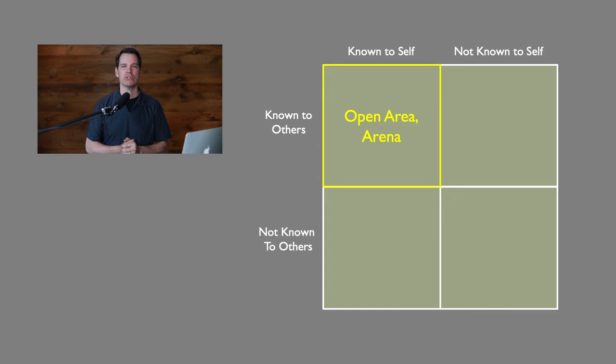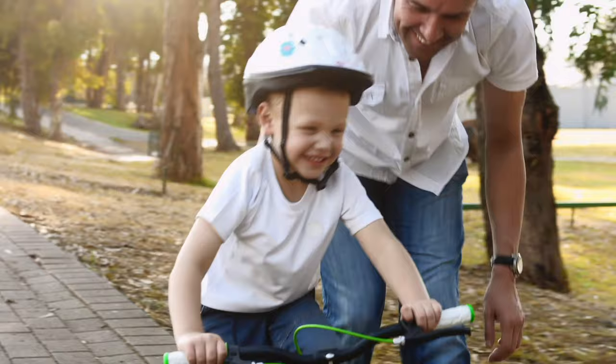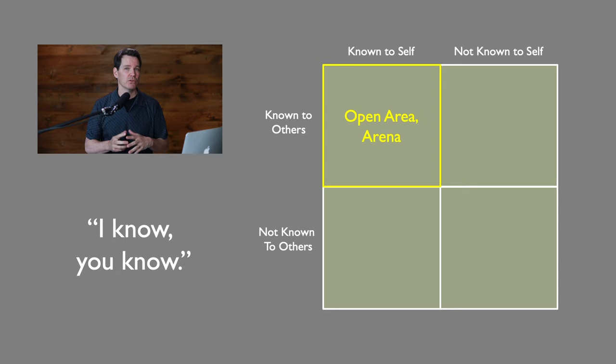Let's start with the most obvious window. This represents everything we know about ourselves and everything that others know about us — it's called the open area or arena, sometimes described as the 'I know, you know' window. There are no secrets here. For example, everybody who knows me sees that I'm outgoing, quick to laugh, very willing to engage in conversations. I usually have a positive attitude. I'm a teacher, a Christian, and I care about my family. I'm aware of all of this and willing to communicate it openly. What would you put in this square for yourself?